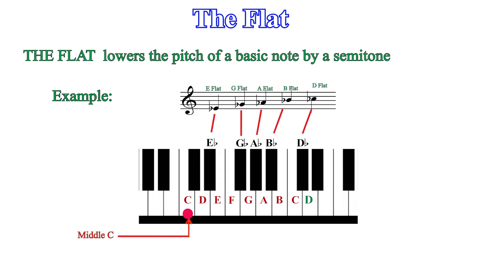Similar to the discussion on sharps, note that if C is flattened, we will get B as C flat, since there is no black key between B and C. Also when F is flattened, E is the tone obtained.